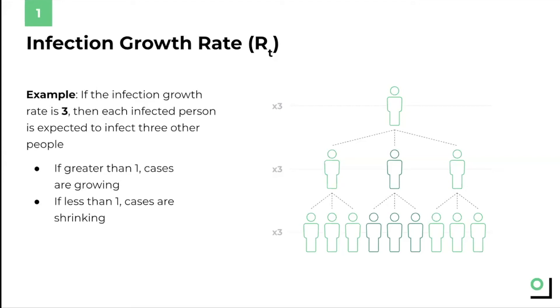So, the higher R_t is in a given place, the faster COVID is spreading there. An R_t above one means that the number of cases is growing. If R_t is less than one, that means that cases are shrinking.